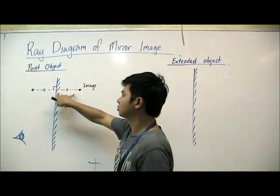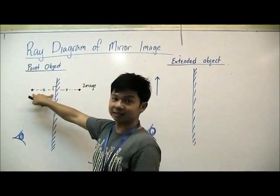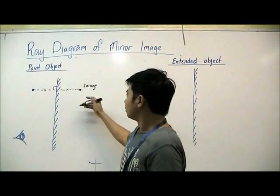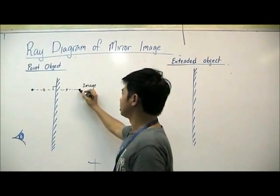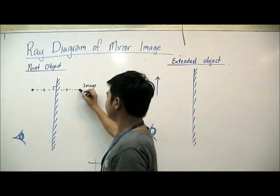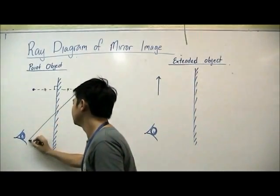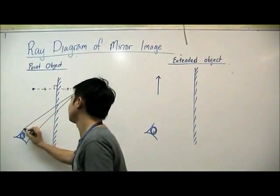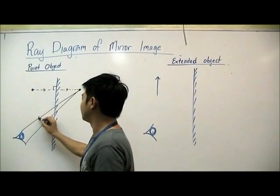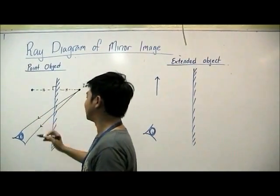And the image distance is equal to the object distance. So in this case, we know that the eye is going to see the image. So from the image, we draw two lines. One line to the bottom of the eye. The other line to the top of the eye. And we draw in the arrow towards the eye.